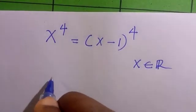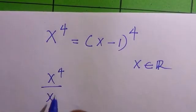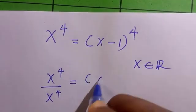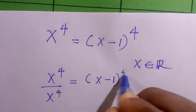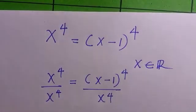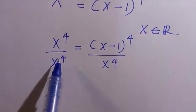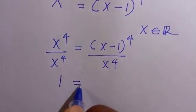So the first step is if we have x to the power of 4, let's divide x to the power of 4 throughout. So we have this as (x minus 1) to the power of 4 divided by x to the power of 4. If this and this cancel each other, we have 1 equals...